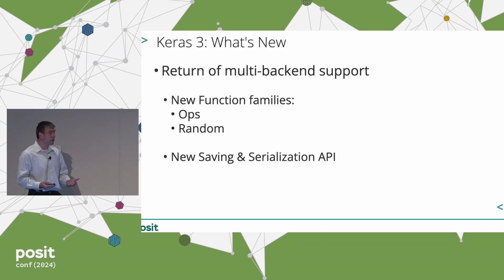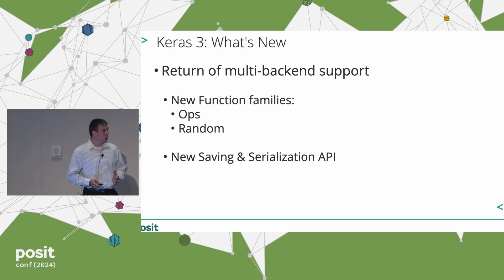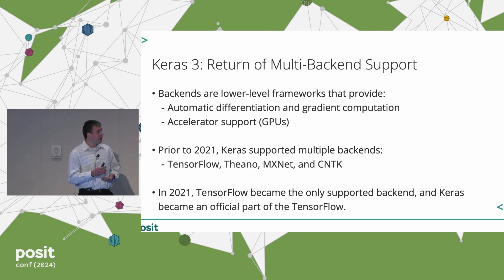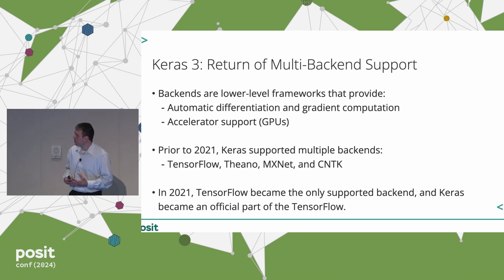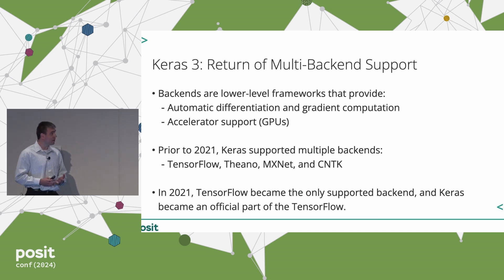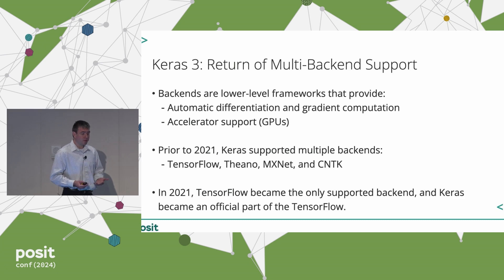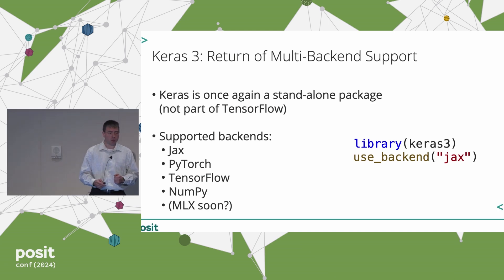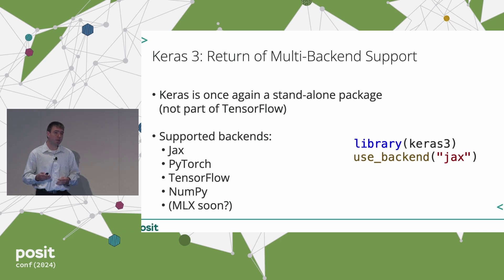Back to Keras 3. The biggest thing to know is the return of multi-backend support, which comes with a set of new features that let you write backend-agnostic code. A backend is something Keras uses to compute gradients and to interface with a GPU. For most of its life, up to about three years ago, Keras supported multiple backends including TensorFlow, Theano, MXNet, and CNTK. Those last three were retired, and TensorFlow became the only supported backend when Keras became an official part of TensorFlow. Now with Keras 3, Keras is once again a standalone package. When you first load the package, you can call use_backend with the name of your backend — the supported backends today are JAX, PyTorch, and TensorFlow. You can also use NumPy in inference-only mode, and there's work ongoing to add MLX as a backend.